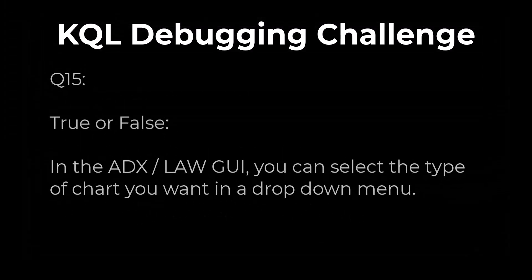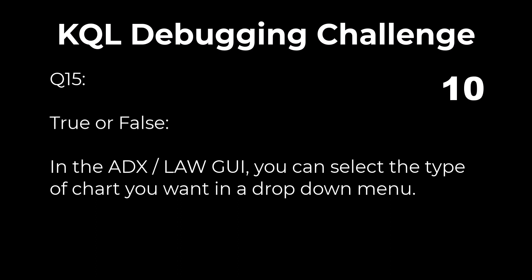Problem 15. Here's the last question. True or false? If I use the GUI to select a chart, I can pick which type of chart through a drop-down of options. The answer is false. The best way to select the precise type of chart or graph is to use render in the query.